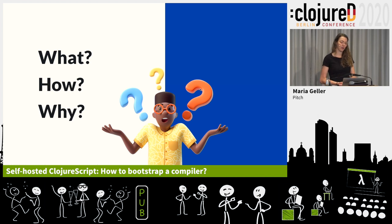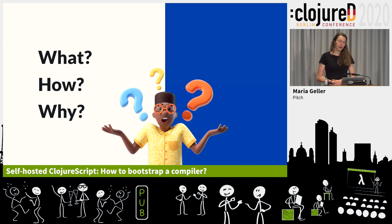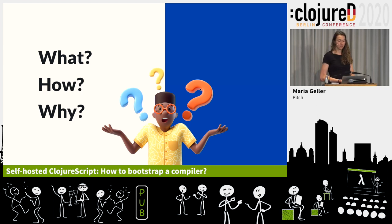We'll be talking about the what, how, and why. So what is a self-compiling compiler, and what does it mean to bootstrap a compiler? How does bootstrapping work, and how was it done for ClojureScript in particular? And then we'll also be looking at the why — why do you want to have a self-compiling compiler in the first place?